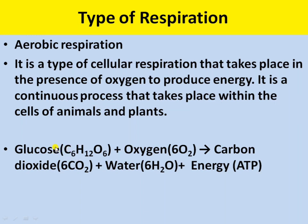During aerobic respiration, glucose (C6H12O6) is completely broken down to carbon dioxide (6CO2) and water, and a large amount of energy is released. It occurs in most organisms like insects, worms, fish, frogs, birds, and human beings — essentially all the animals we see around us.